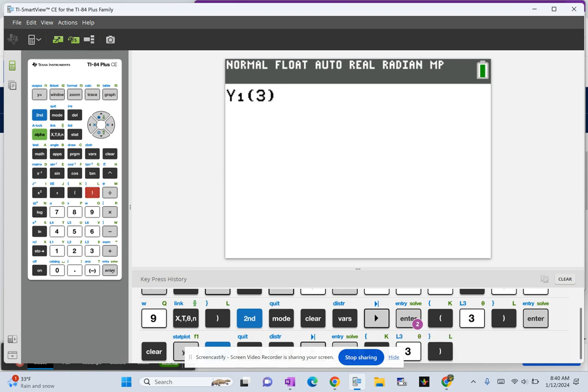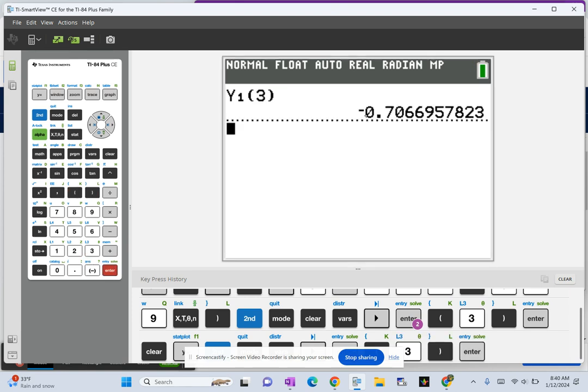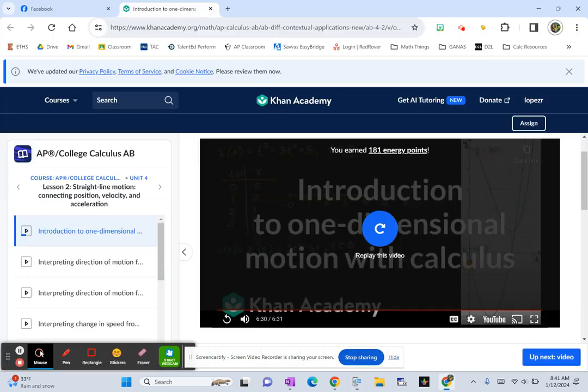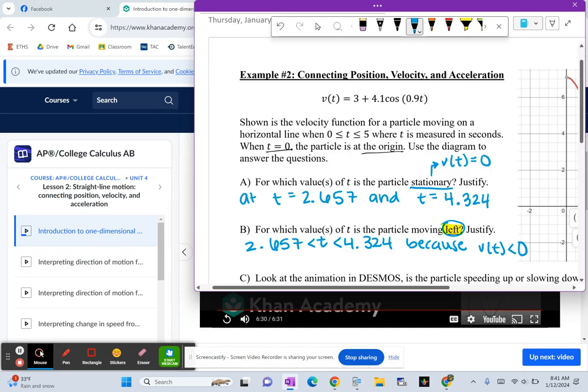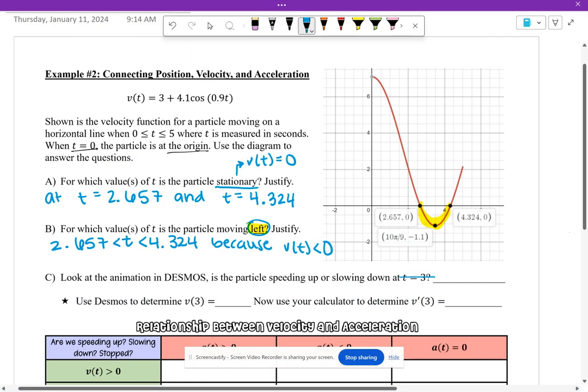To evaluate the velocity at time three, I'm just going to go and tell my calculator, hey, at three seconds, how fast is the particle traveling? And it's traveling negative 0.707. That's going to be the speed of the particle.